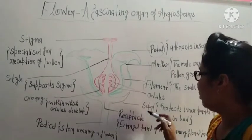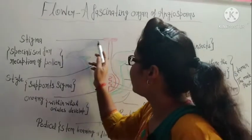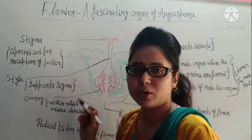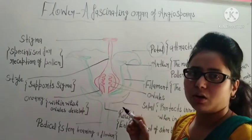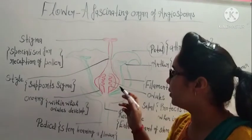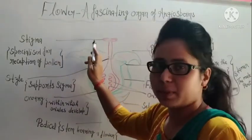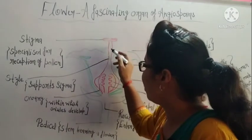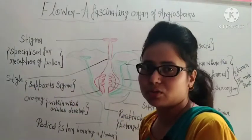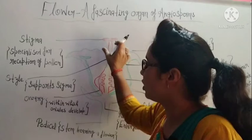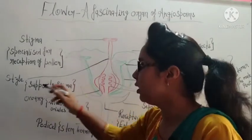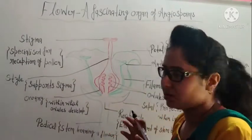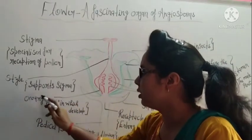You will also see the stigma — the stigma is specialized for reception of pollen grains. Pollen grains land on the stigma, and from there fertilization and other processes are completed. This stigma portion is part of the female organ. Below the stigma you will see a tube-like or neck-like structure called the style, which supports the stigma.